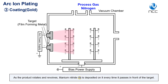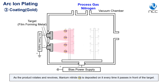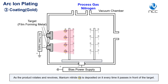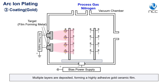As the product rotates and revolves, titanium nitride is deposited on it every time it passes in front of the target. Multiple layers are deposited, forming a highly adhesive gold ceramic film.